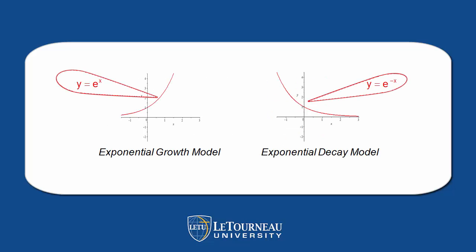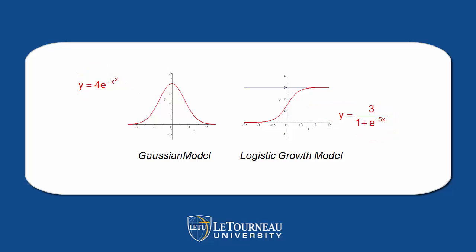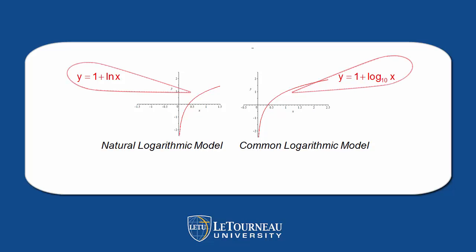What I've done here is use a calculator to graph some of these so that you can see their general shape and see why they would be so important. There's exponential growth and decay. The Gaussian model — notice it looks an awful lot like the normal curve. Actually, part of that formula gets used in statistics. On the right, we have the logistic growth, which is important in differential equations. And then we've got our two natural and common logarithmic models, used in things like figuring out the Richter scale for earthquakes.